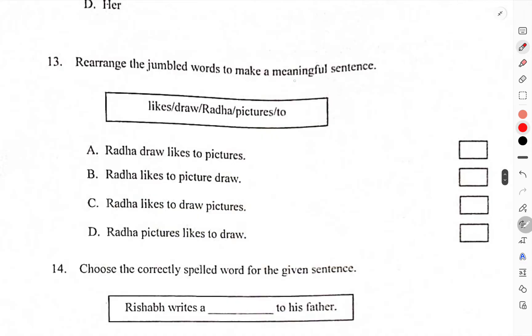Reading the jumbled words to make a meaningful sentence. Likes, draw, Radha, pictures, to. Radha likes to draw pictures. C should be correct.